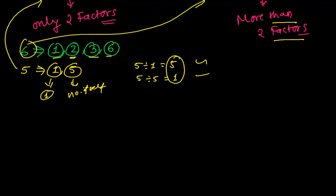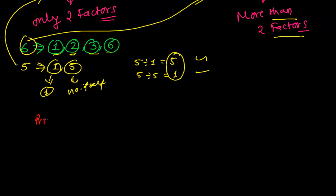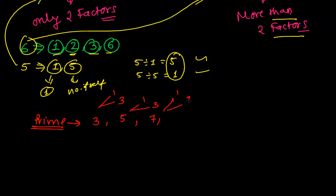Let's take a few more examples of prime numbers. 3 has only 2 factors: 1 and 3 itself. Similarly, 7 can be divided by 1 and by 7 itself. You might guess 9 is prime, but 9 can be divided by 1, by 3, and by 9 itself — so it has 3 factors, which means 9 is composite, not prime. 11 can only be divided by 1 and 11 itself. 13 is also prime. But 15 is not prime — it can be divided by 1, 3, 5, and 15, so it has 4 factors and is composite.